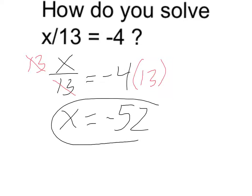So again, if you want to solve a division problem, you multiply by the denominator, which cancels out the denominator, and then you have to do the same to the other side.